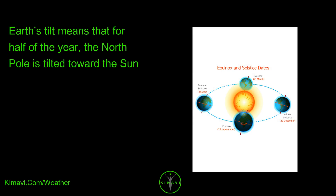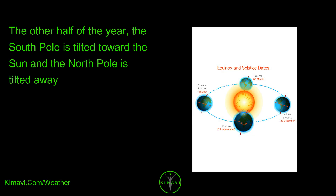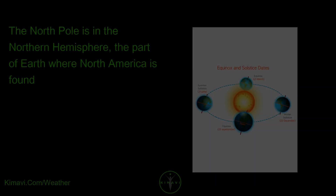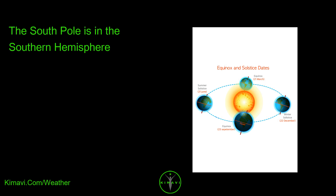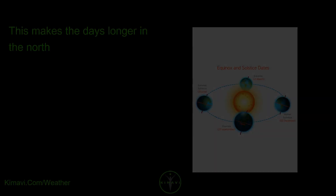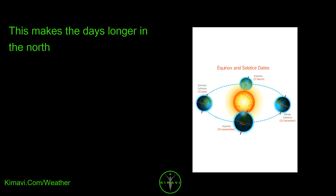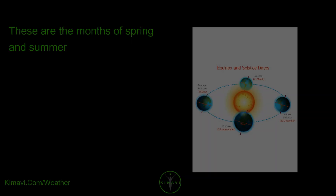Earth's tilt means that for half of the year, the North Pole is tilted toward the sun and the South Pole is tilted away. The other half of the year, the South Pole is tilted toward the sun and the North Pole is tilted away. The North Pole is in the Northern Hemisphere, the part of Earth where North America is found. When the Northern Hemisphere is tilted toward the sun, it gets more direct sunlight for more time each day. This makes the days longer in the North. The air and the oceans warm in the sunlight, and the temperature goes up. These are the months of spring and summer.